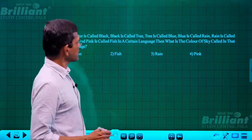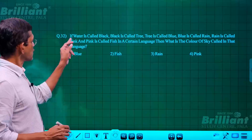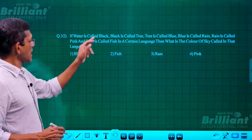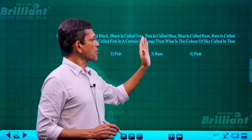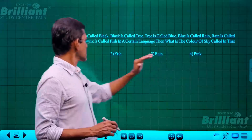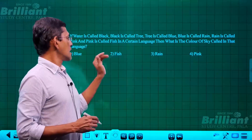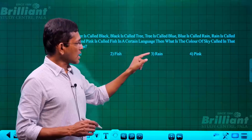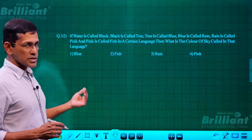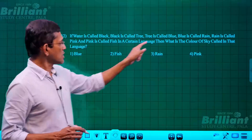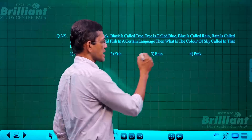Question 32 is a coding-decoding question. Water is called black, black is called tree, tree is called blue, blue is called rain, rain is called pink, pink is called fish. What is the color of the sky in that language? The color of the sky is blue, and blue is called rain. So the answer is rain.